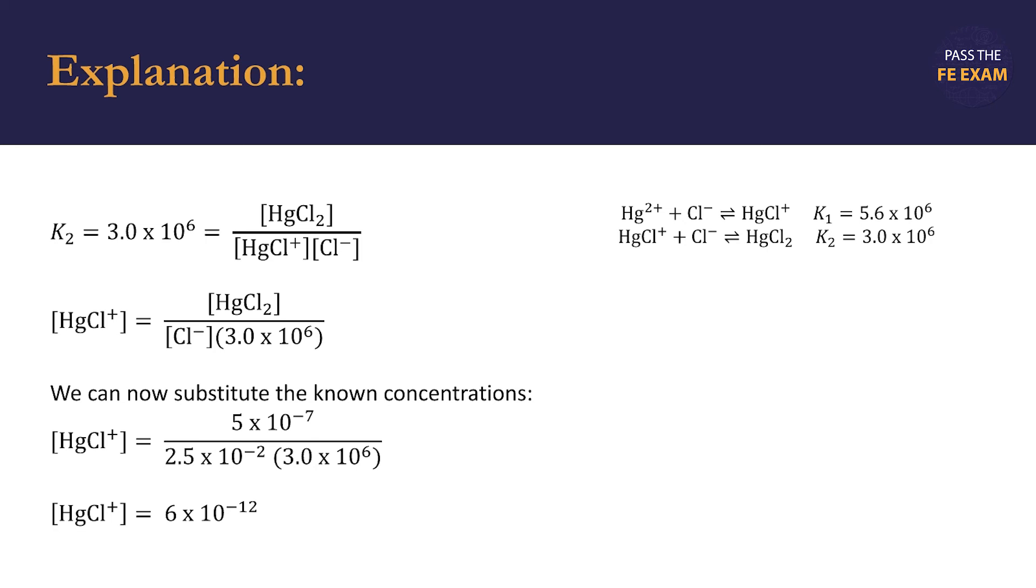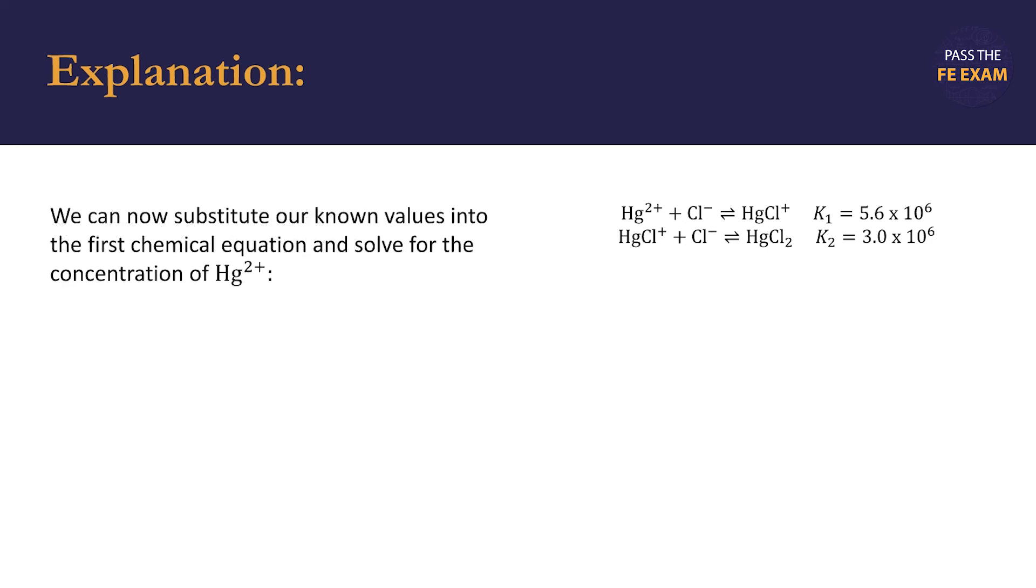We can now continue this process and substitute our known values into the first chemical equation and solve for the concentration of the mercury cations Hg2+. The setup is similar to what we did a moment ago with the second equation and equilibrium constant K2, where the equilibrium constant is equal to the concentration of the products divided by the concentration of the reactants. In this case, we're going to use the first equation and the corresponding equilibrium constant K1.